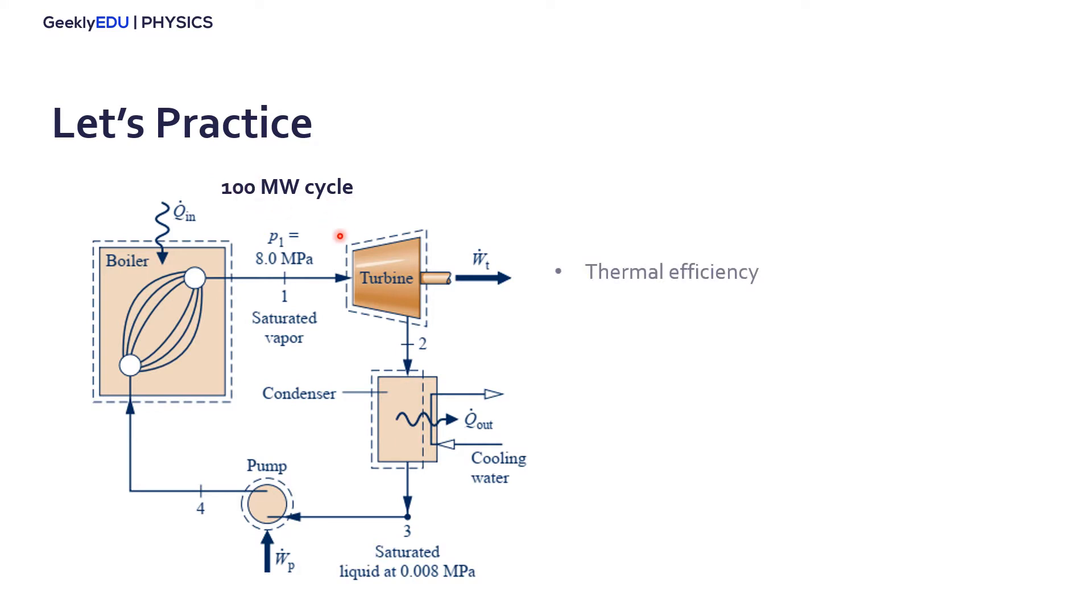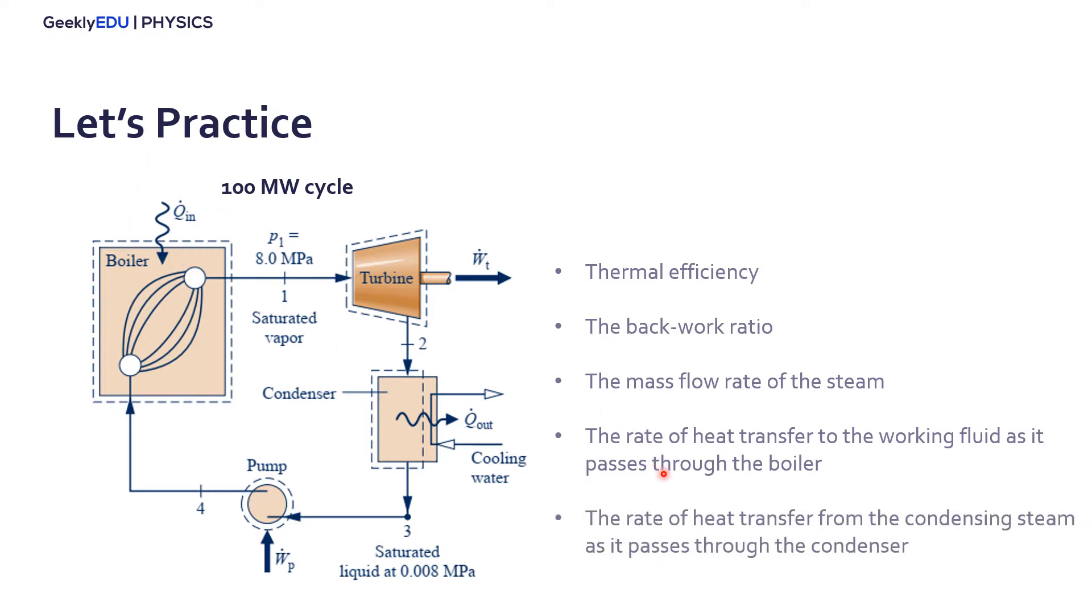So we want to find the thermal efficiency, the back work ratio, the mass flow rate of the steam, the rate of heat transfer to the working fluid as it passes through the boiler, in other words the heat transferred in the cycle, and also the rate of heat transfer from the condensing steam as it passes through the condenser, in other words the heat transferred out of the cycle.